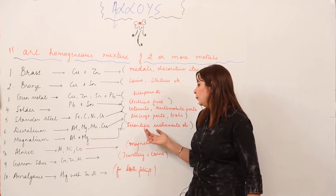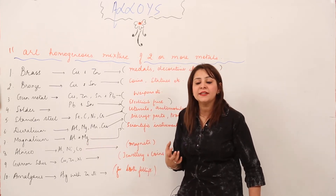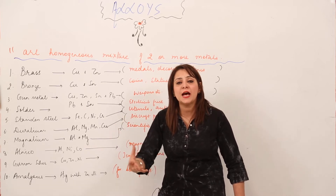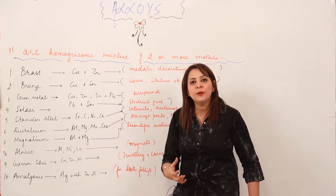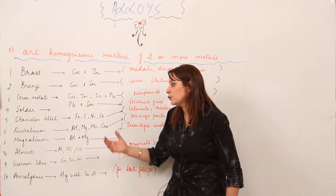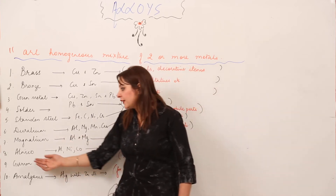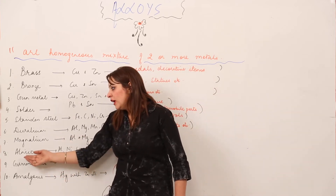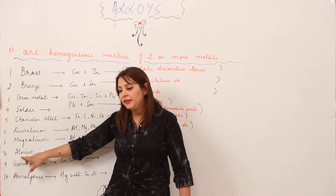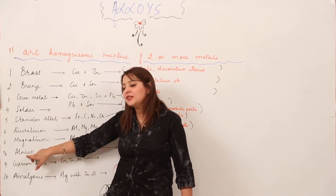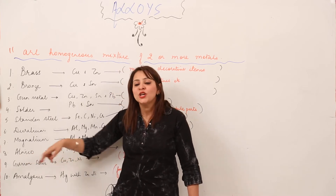Next is magnelium, which is again an alloy of aluminium mixed with magnesium. It is used for making scientific instruments — the instruments which we use in physics labs and chemistry labs are made out of magnelium.